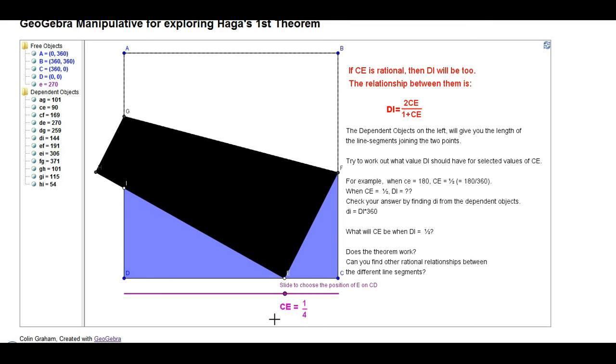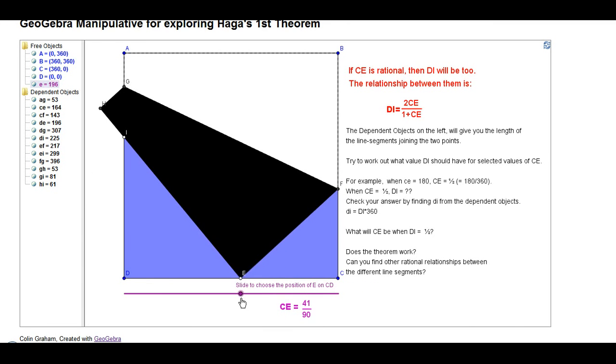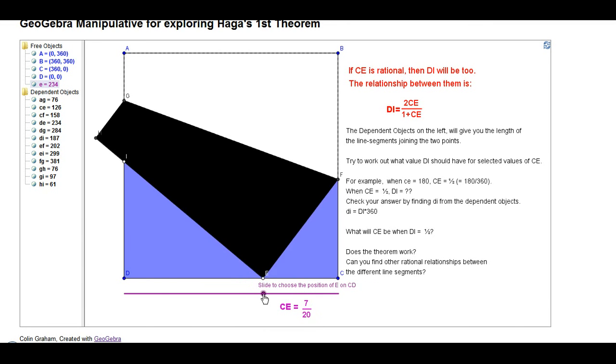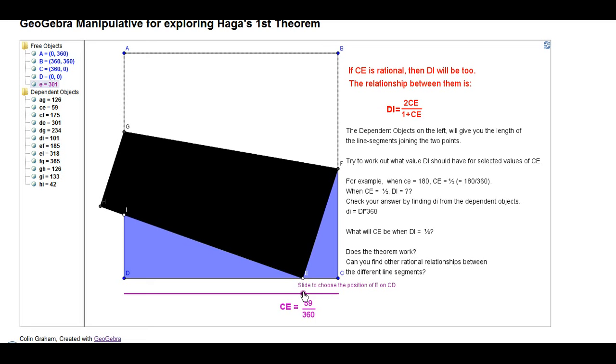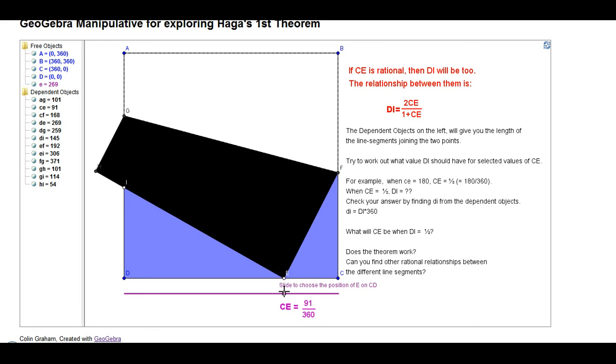This is an online dynamic worksheet basically to demonstrate Hager's theorem, which is part of origami and paper folding. A lot of fractions works in algebra, but way beyond what would be going on in a primary school. At least in most primary schools, I expect.